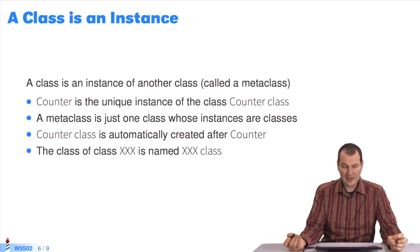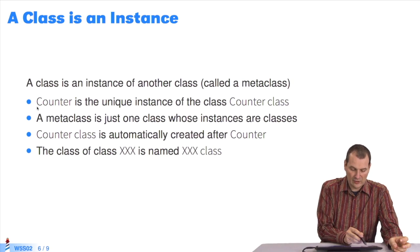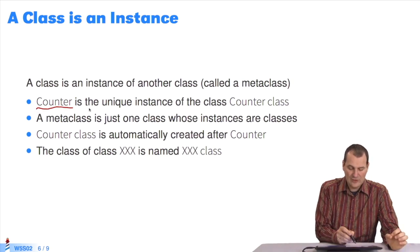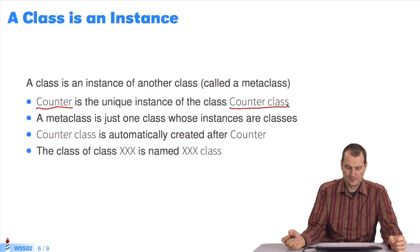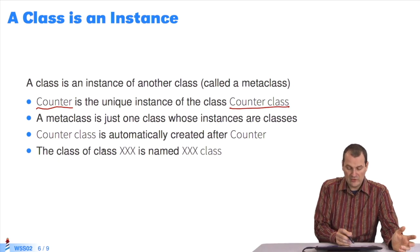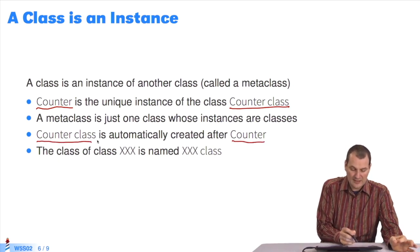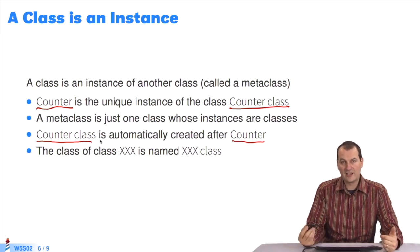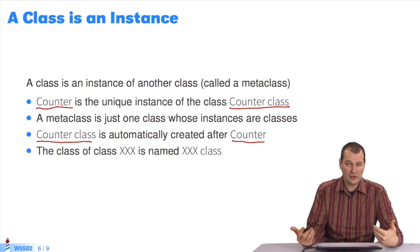The next thing is that the counter class, in this line, the counter class is the only instance of the class counter class. This counter class is created automatically, without you knowing it. When you defined the counter class, the system automatically created the class counter class, and it created the counter class. You thought you were creating one class, but in fact, you were creating two.